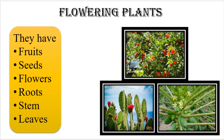There is a variety of plants within the flowering plant group. What are the common characteristics of all these plants? They all have fruits, seeds inside the fruits, flowers, roots, stem, and leaves.